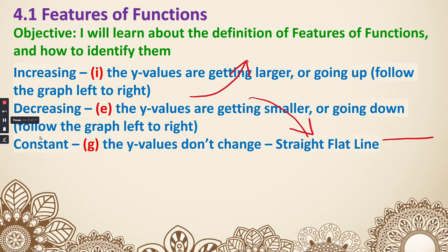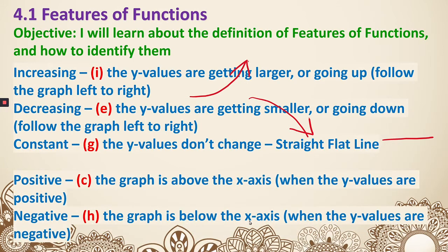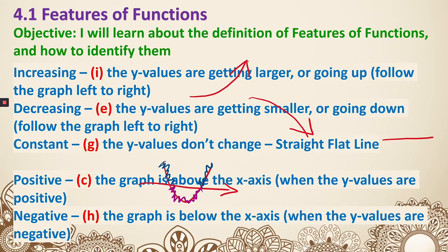Two more: positive and negative. For positive, the graph is above the x-axis. So if this is our graph and this is our x-axis, the portion above the x-axis is positive. For negative, if the graph is below the x-axis, that portion is negative.